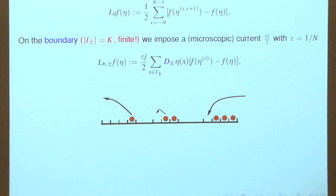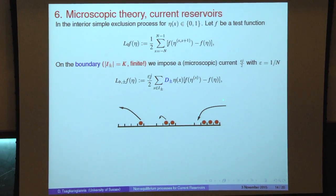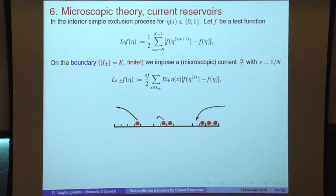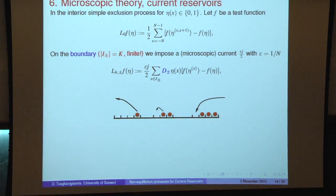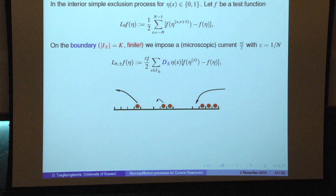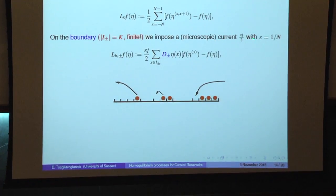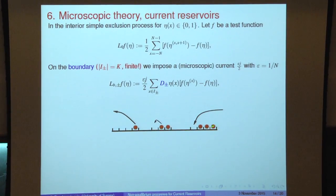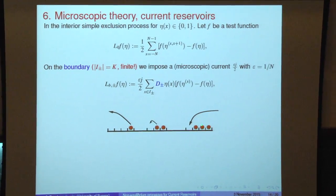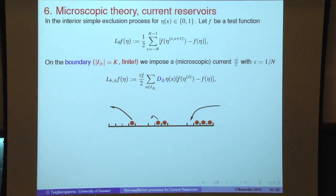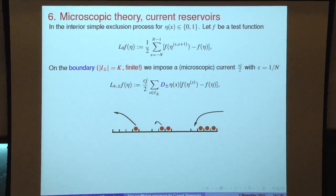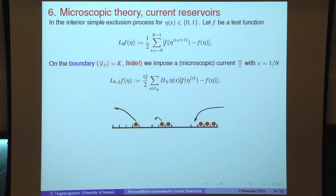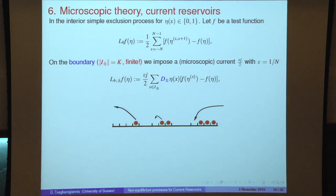We want to put this microscopic current by having the reservoir put particles exactly with this current. A particle comes in with rate epsilon J from the right. But it might be occupied due to simple exclusion, so I try the next position and so on. At the end of the day, I put a particle at the first available position with this rate epsilon J. We hope that in the hydrodynamic limit this will give us an observed current J in the system.